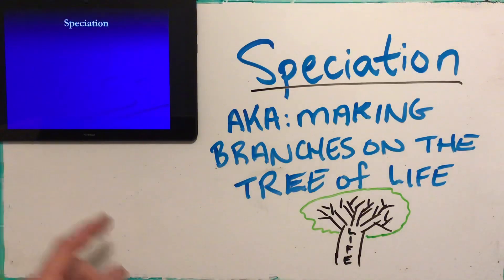Postzygotic mechanisms occur after a zygote is formed. The first is zygotic mortality — the sperm and egg meet and form a zygote, but during prenatal development this zygote dies. For example, if the prenatal period is three months, the zygote might die after month one because it doesn't develop properly.